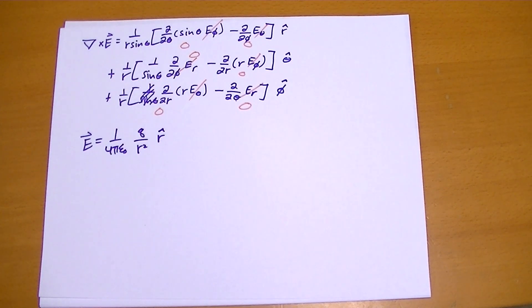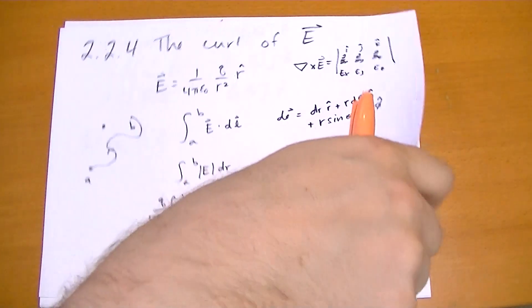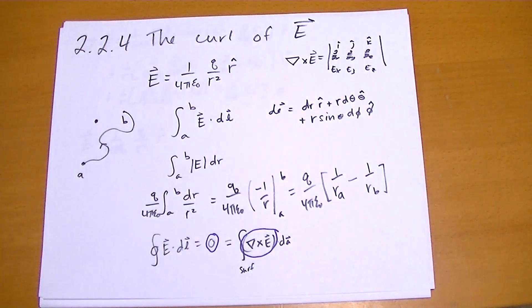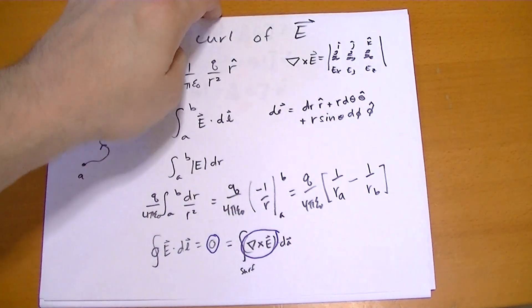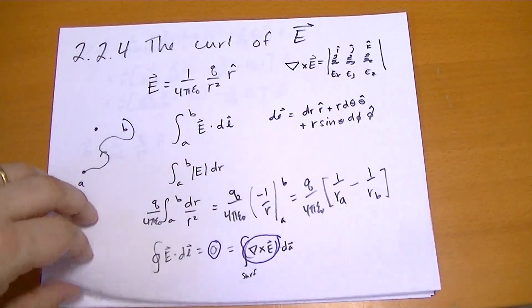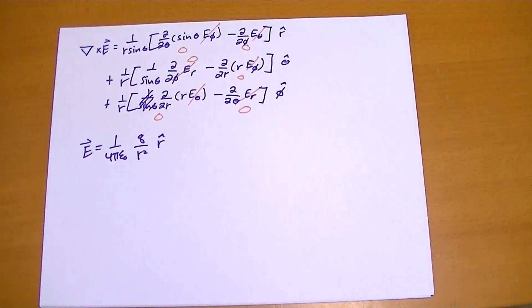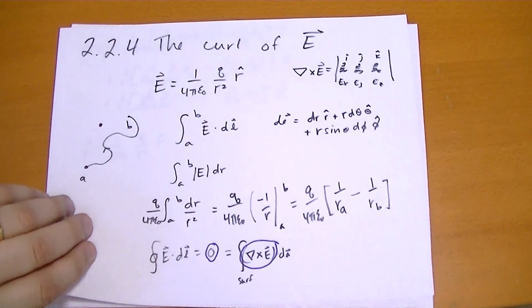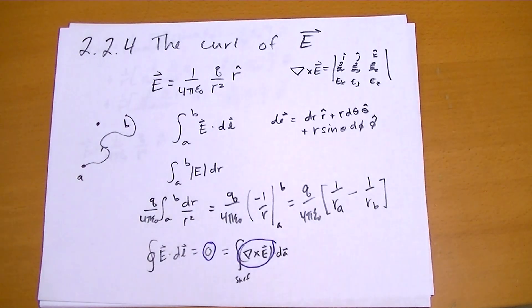So we can go through Stokes' theorem, or we can directly take the curl — either way it's zero. Everything makes sense. Thanks for your time. Bye.